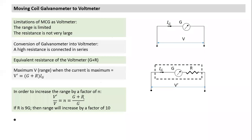We can calculate the appropriate value of R depending on the desired range increase. As the value of R increases, the range increases. As resistance increases, the error in measurement of potential difference also reduces, because a small galvanometer resistance alters the potential difference it is supposed to measure.